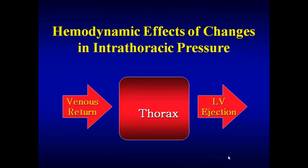Since all those effects can be explained by changes in intrathoracic pressure, we're now going to switch from changes in lung volume to changes in intrathoracic pressure. To understand how changes in intrathoracic pressure alter cardiovascular function, you have to accept the following hypothesis: the heart is in the chest — a pressure chamber inside a pressure chamber. Thus, increases or decreases in intrathoracic pressure must affect the pressure gradient for venous return to the heart and left ventricular ejection from the heart, independent of the heart itself.